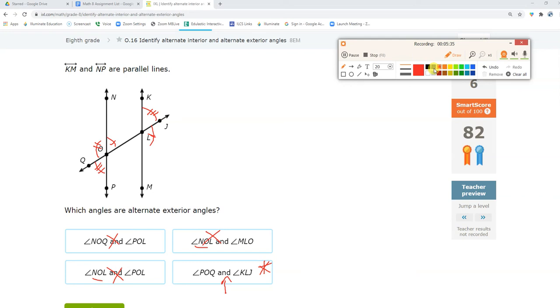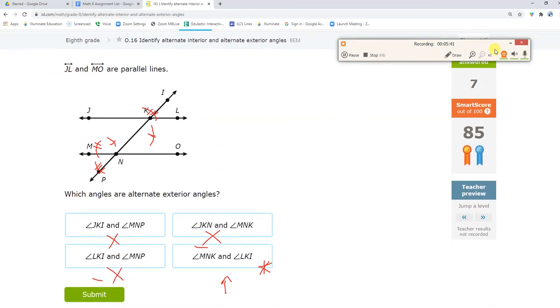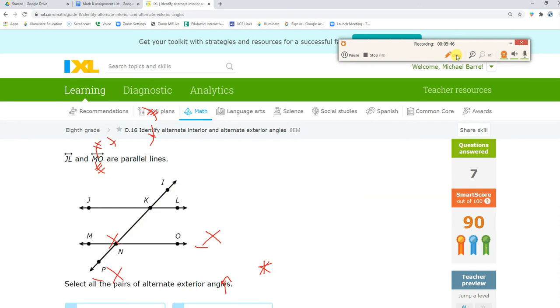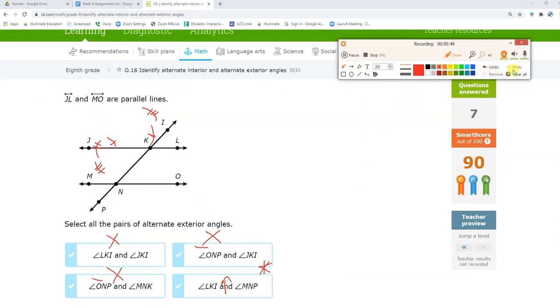All right, let's jump a level. Challenge zone. I don't think anything crazy is going to happen here. Alternate exteriors. This is the same stuff. Angle LKI. Let's try LKI first. Alternate exterior, LKI. Yep, with angle PNM. It's right there. It's just backwards. It's fine. It's that one.